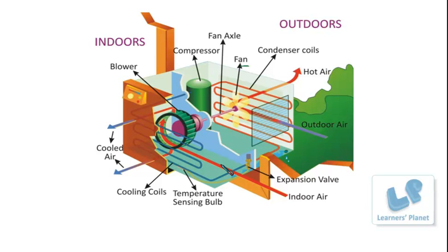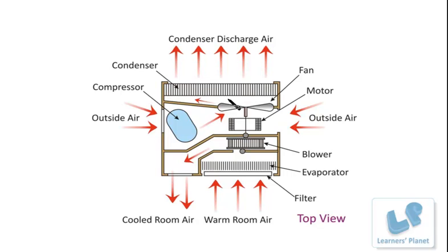The thermostat senses when the temperature has reached the right setting and turns off the air conditioner. As the room warms up, the thermostat turns the air conditioner back on until the room reaches the temperature again. Importantly, the thermostat doesn't turn off the entire air conditioner — it only turns off the compressor. The air conditioner itself turns off only when the main switch is off. So it is the compressor that the thermostat turns off when it senses the temperature at the right setting, and it turns the compressor back on as the room warms up.